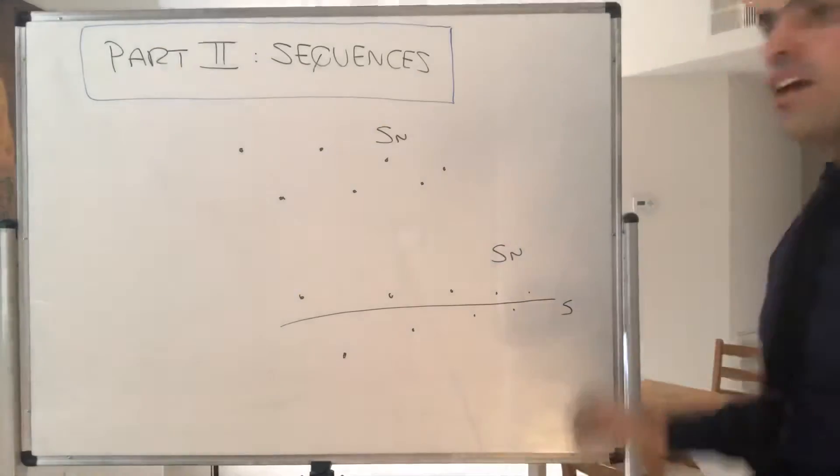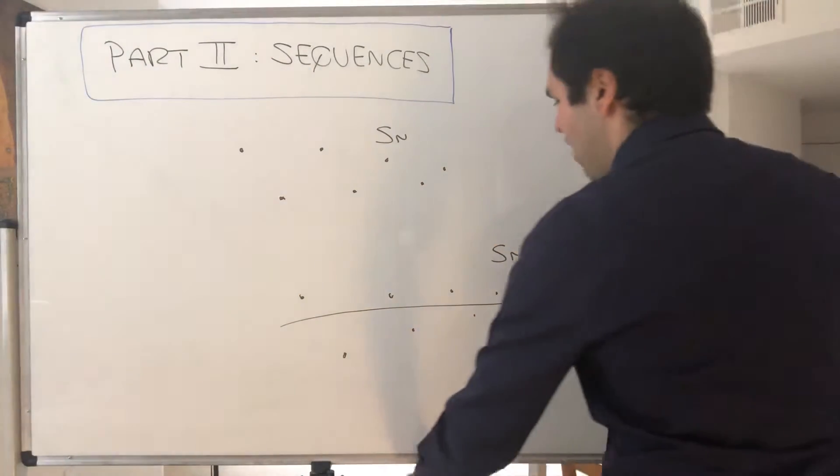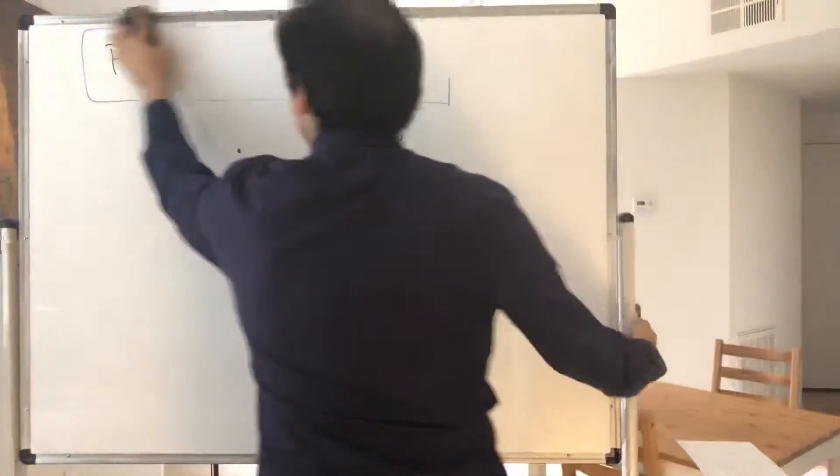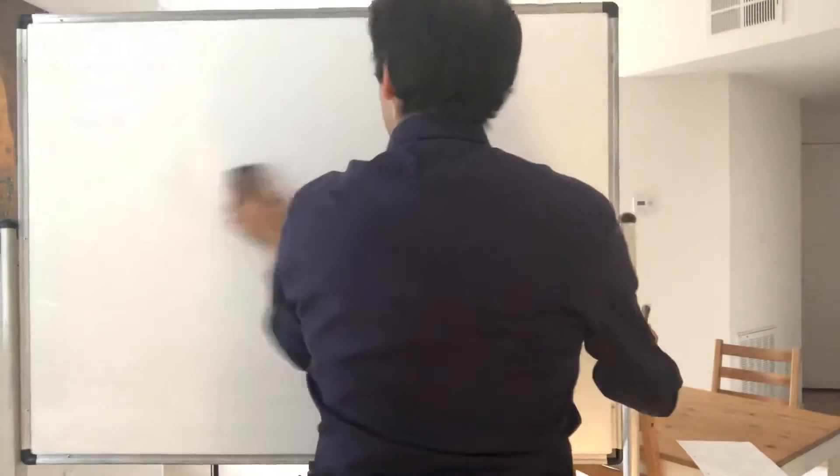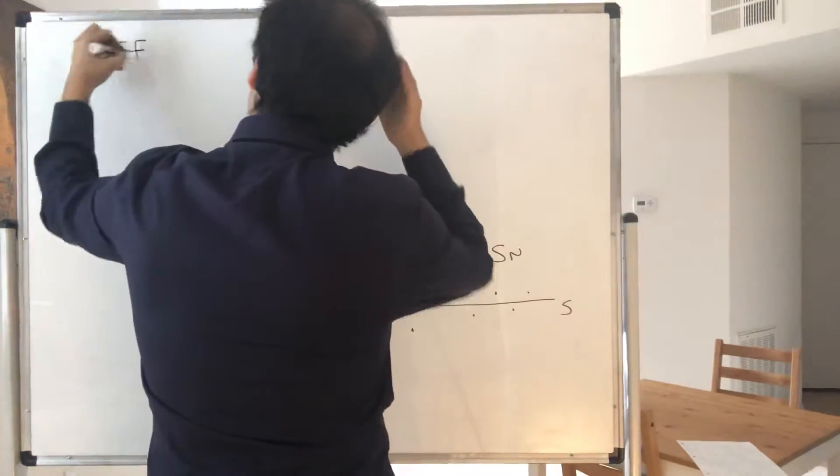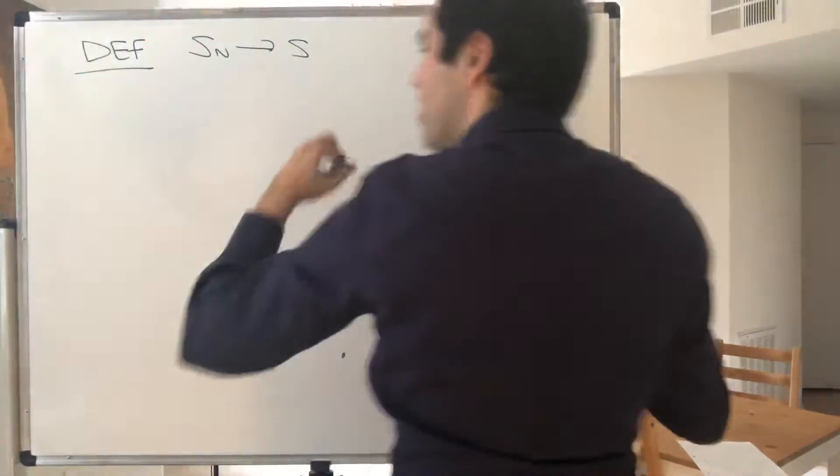However, how do we make this formal? Well, for this we have to use the epsilon definition of a limit. So definition: we say that Sn converges to S as n goes to infinity